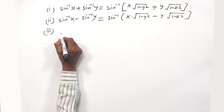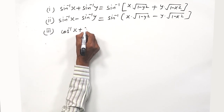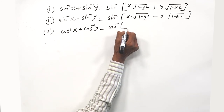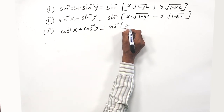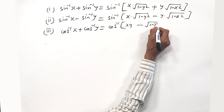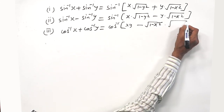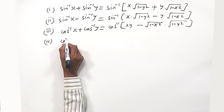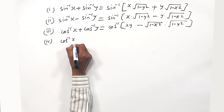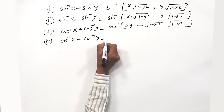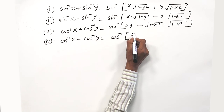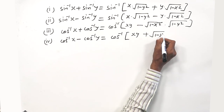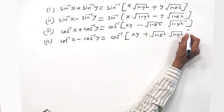Similarly for cos: cos⁻¹x + cos⁻¹y can be written as cos⁻¹ of [xy − √(1 − x²)·√(1 − y²)]. And cos⁻¹x − cos⁻¹y = cos⁻¹ of [xy + √(1 − x²)·√(1 − y²)].